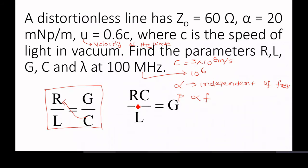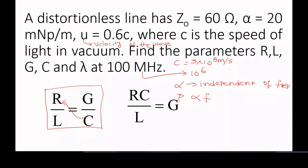RC by L is equal to G. We will use this equation in order to solve this problem. For a distortionless line, RC by L is equal to G.